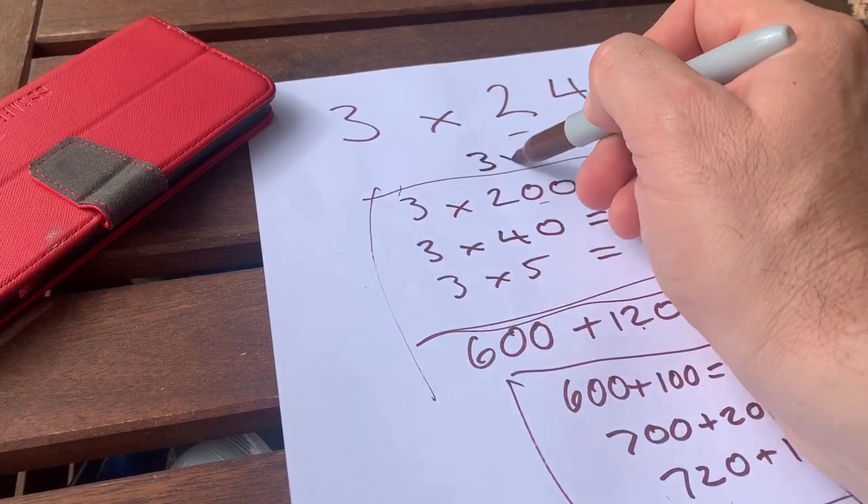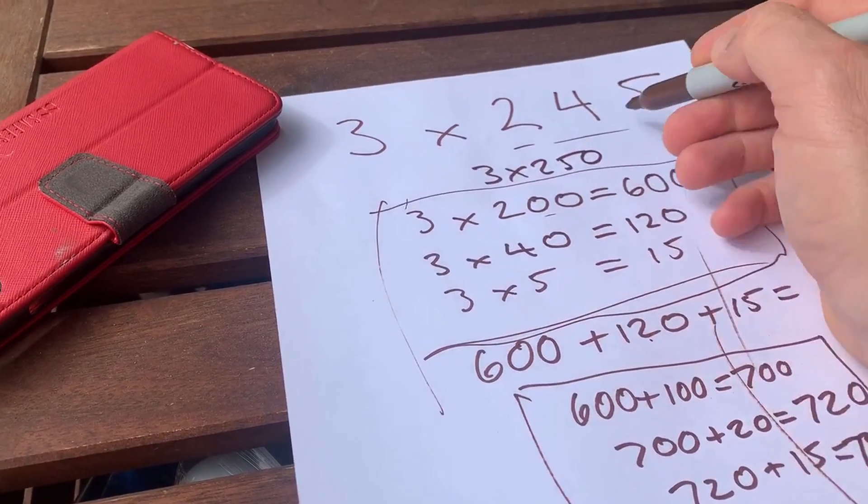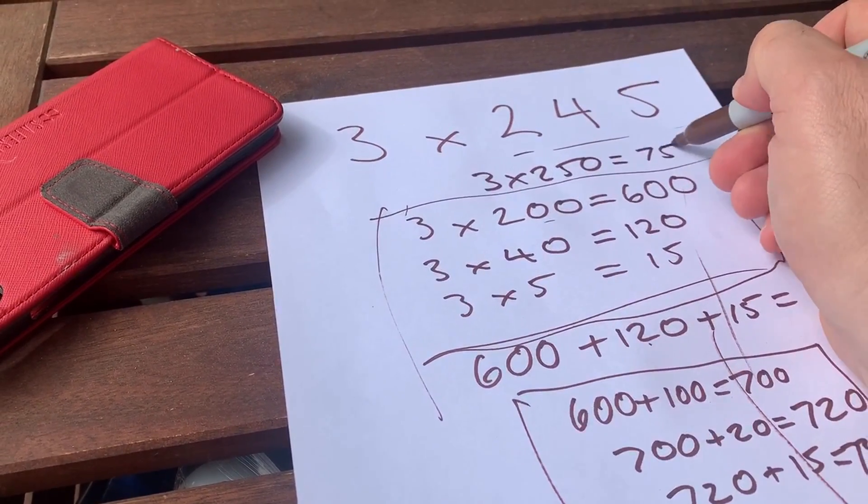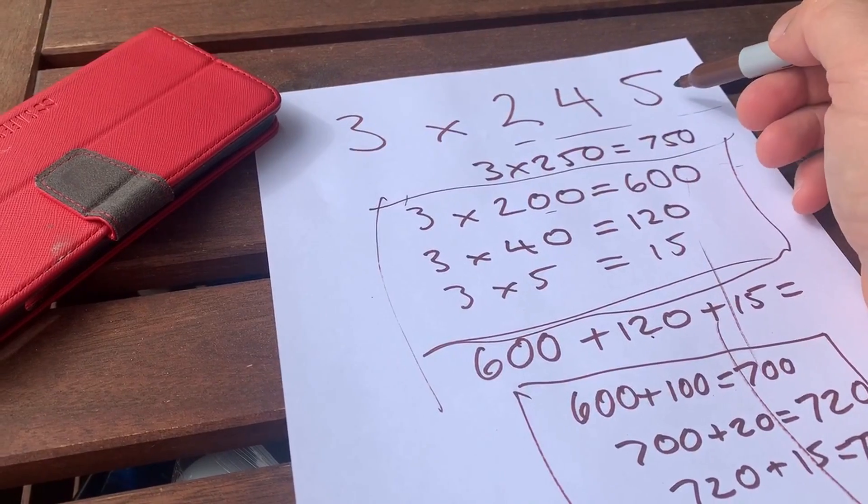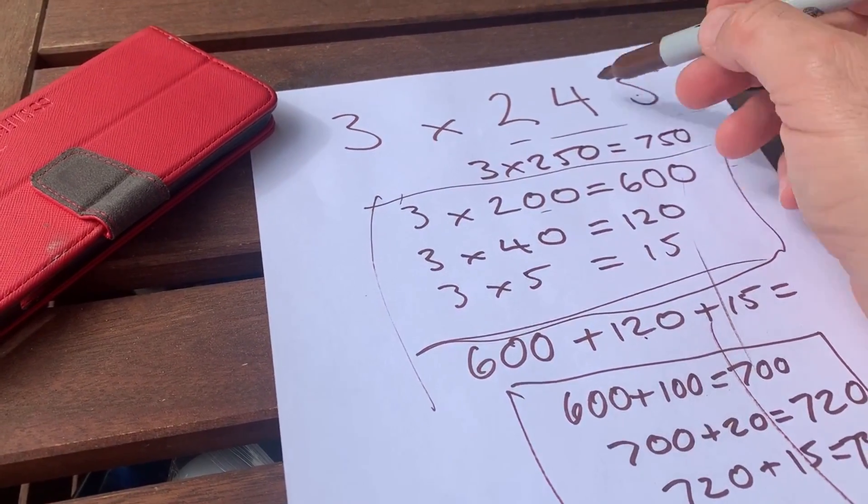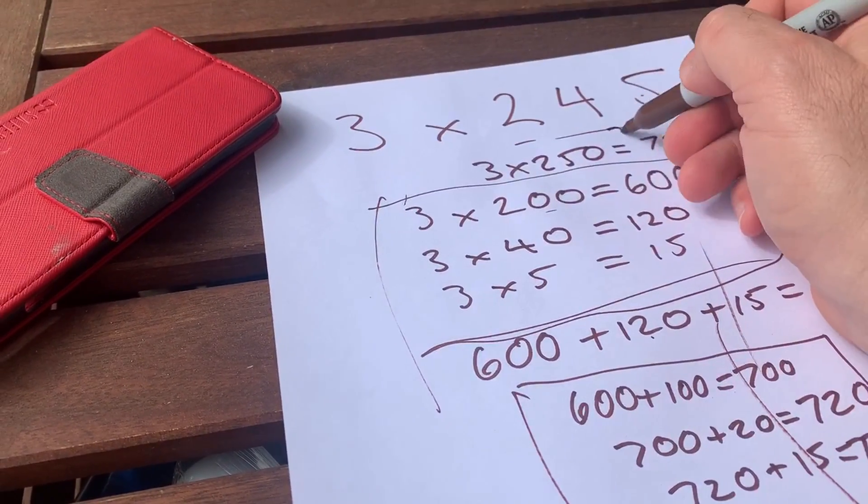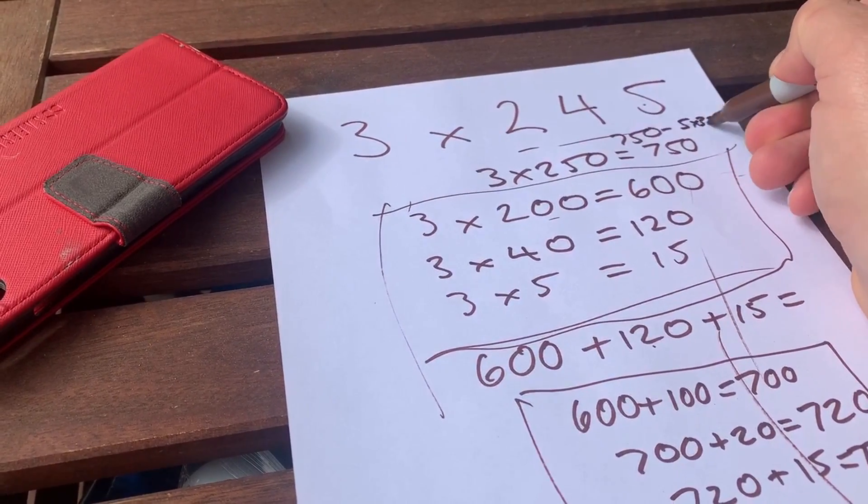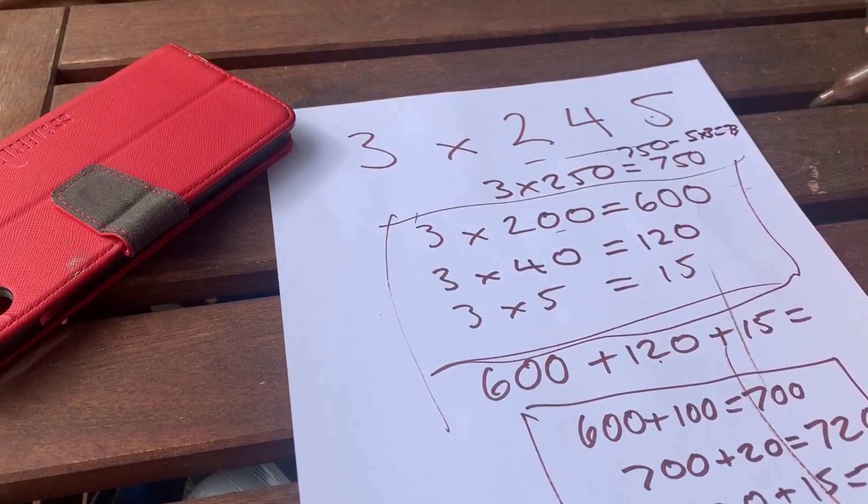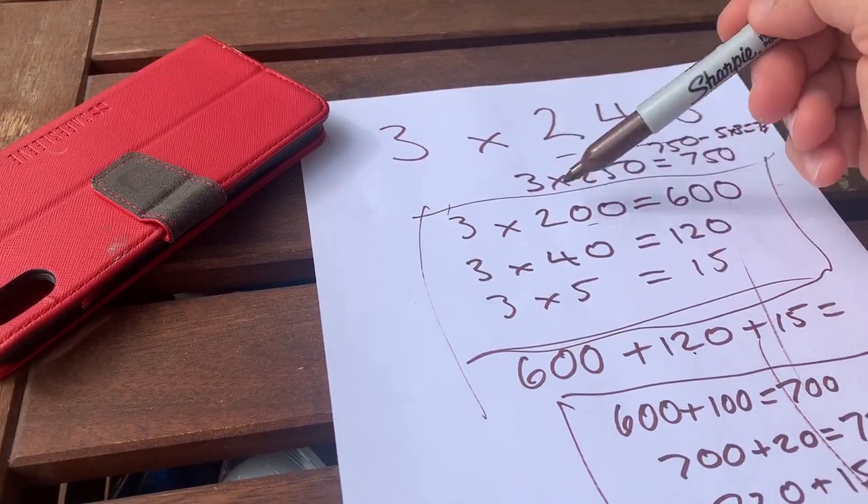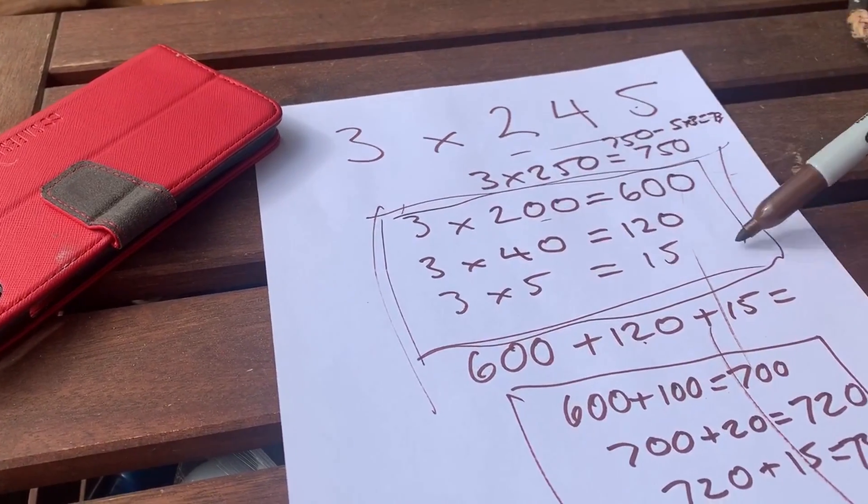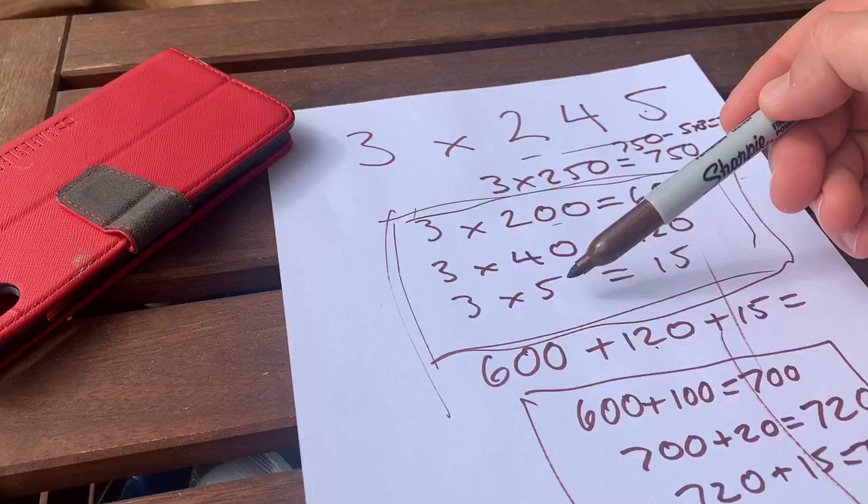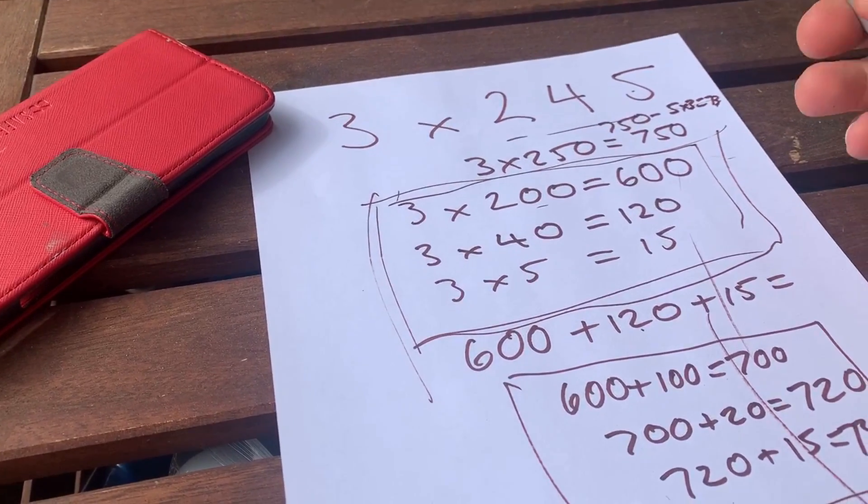So you might say, what's three times 250, and then I'm taking away five groups of three, which would give us 735 as well. I think most of you have worked in this way, though, breaking it into your 200s, your 40, and your five.